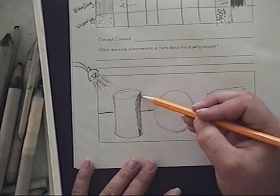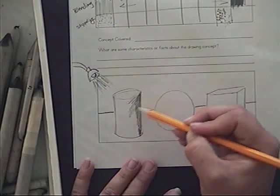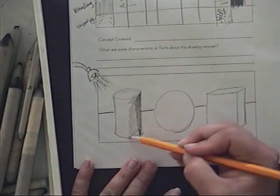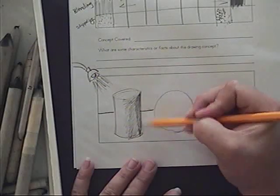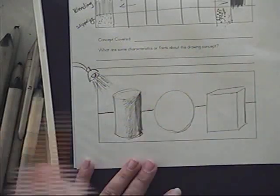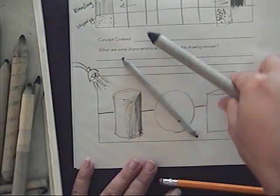And over here on the opposite side, we're creating our dark values. Somewhere in the middle, we have mid-tones or mid-values. Now, after blending, so I just used my pencil, you can use a tool called a blending stump.